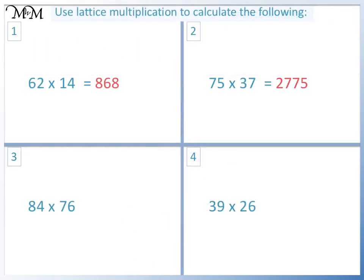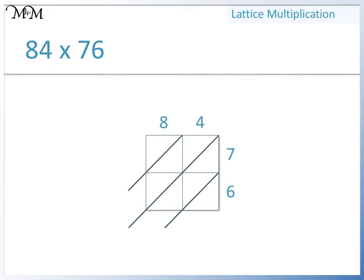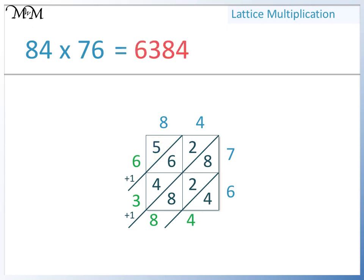Question 3: 84 times 76. 8 times 7 equals 56. 4 times 7 equals 28. 8 times 6 equals 48. 4 times 6 equals 24. Here we have 4. 8 plus 2 plus 8 equals 18. We write 8 here and carry the 1. 4 plus 6 plus 2 plus the 1 that we carried equals 13. We write the 3 here and carry the 1. 5 plus 1 equals 6. We have 6, 3, 8, and 4. So 84 times 76 equals 6,384.